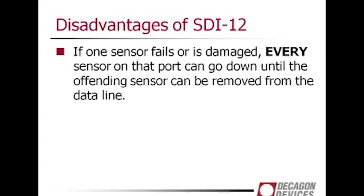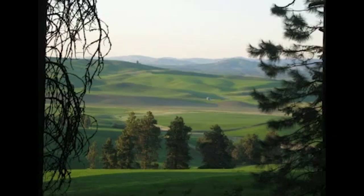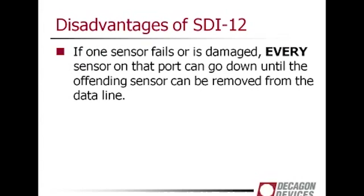The disadvantage of SDI-12 is that if one sensor fails or is damaged, every sensor connected to that port can go down until the offending sensor can be removed from the data line — just like your Christmas tree lights. If SDI-12 were a Faustian deal, this would be the part where you sell your soul to the devil. This tradeoff is the most important thing to consider when you're thinking about implementing an SDI-12 network.